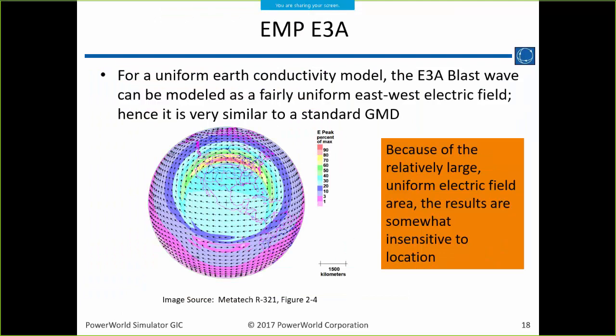The assumption is that during E3A, it causes a fairly uniform electric field across a good chunk of the country. For example, a blast over Mexico City would produce a pretty uniform electric field over much of the continental U.S., which is relatively straightforward to analyze. If you put a 5 volt per kilometer field across all of WECC, that's not realistic for GMD, but it might be realistic for the E3A part of a nuclear EMP. Right now in PowerWorld, E3A is treated as a uniform electric field.